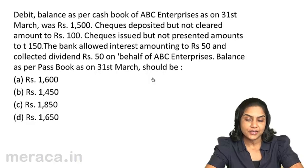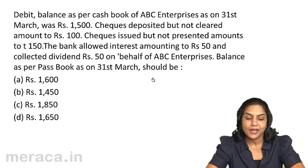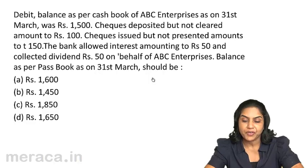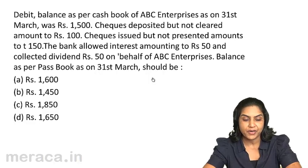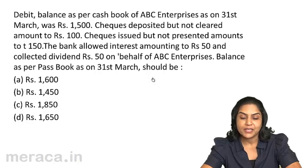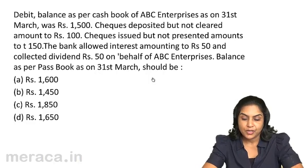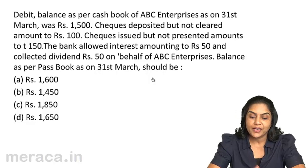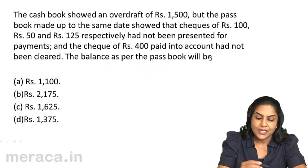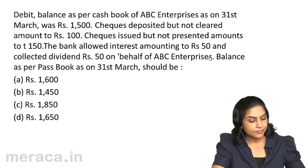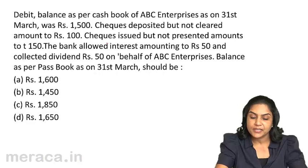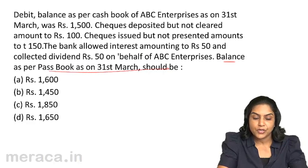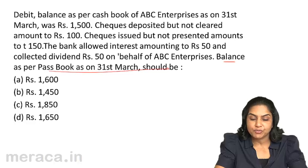Let us now consider a few problems. The debit balance as per cash book of ABC as on the last date of the month is rupees 1500. This is a debit balance as per cash book. What we need to do is find out the balance as per the pass book. So the debit balance as per cash book is a value of 1500.